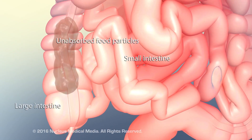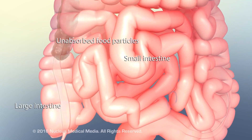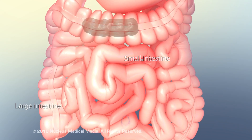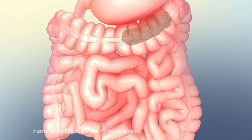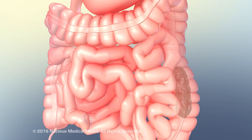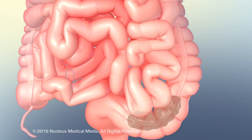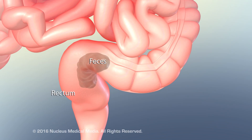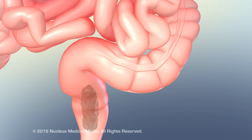Unabsorbed food particles move into the large intestine, which absorbs more water and salts. The remaining material enters the rectum, where it will be stored until it exits the body as solid waste, called feces.